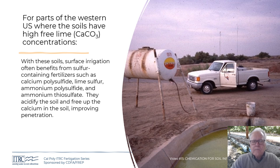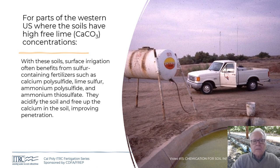In places in the western US with a lot of free lime — calcium carbonate — in the soil, people often apply sulfur-containing fertilizers such as calcium polysulfide, lime sulfur, ammonium polysulfide, and ammonium sulfate for surface irrigation. A float-operated mechanism keeps a small bucket full so the pressure on the flow adjustment nozzle stays constant as the tank drains. It's a common way to treat water for surface irrigation, freeing up calcium in the soil and improving penetration.